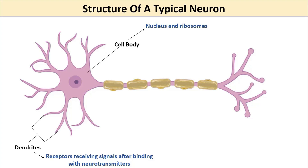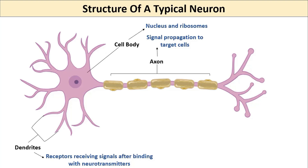The next step is to propagate the signal along a distance. The structure that does this is a long process starting from the cell body called the axon. The signal received by dendrites is in chemical form, but it is propagated as an electrical signal or voltage through the axon. The place where this electrical signal is generated is called the axon hillock, which is the junction point between the cell body and the axon.